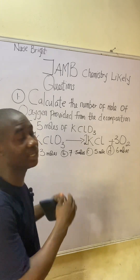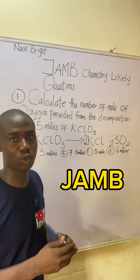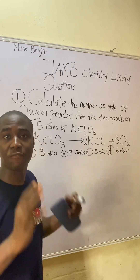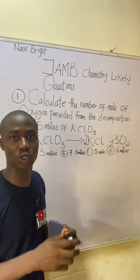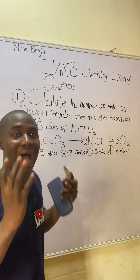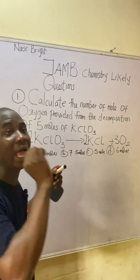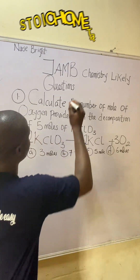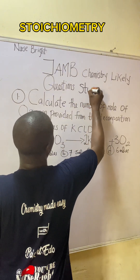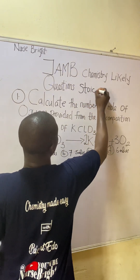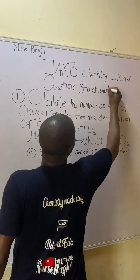You came across this question in the JAM exam — how will you solve it? It is very easy. First of all, we have to know the topic this question is from, and from the look of things this particular question is from the topic called stoichiometry. Understanding the rudiments of stoichiometry is very, very important.